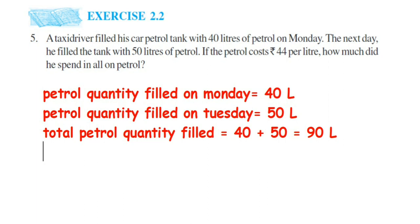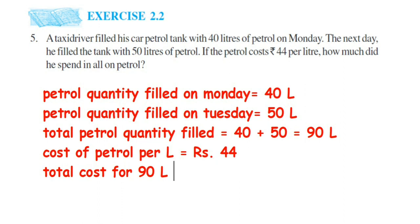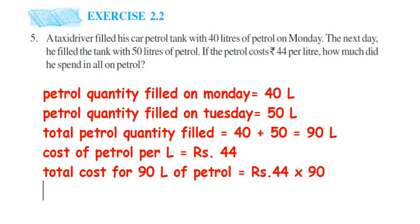They are charging 44 rupees per liter, so we have to find the total cost — just multiply by 44. Cost of petrol per liter is equal to rupees 44. Total cost for 90 liters of petrol will be equal to rupees 44 multiplied by 90, which equals rupees 3960.